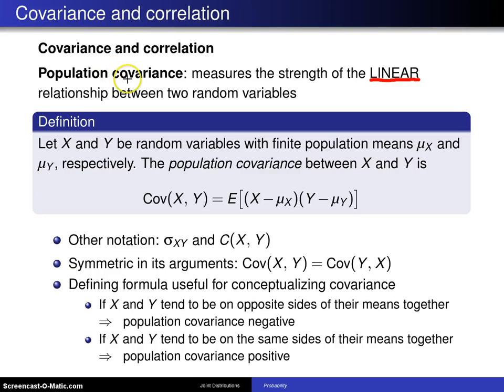The population covariance, and in fact the population correlation also, only measure the strength of a linear relationship between two random variables.